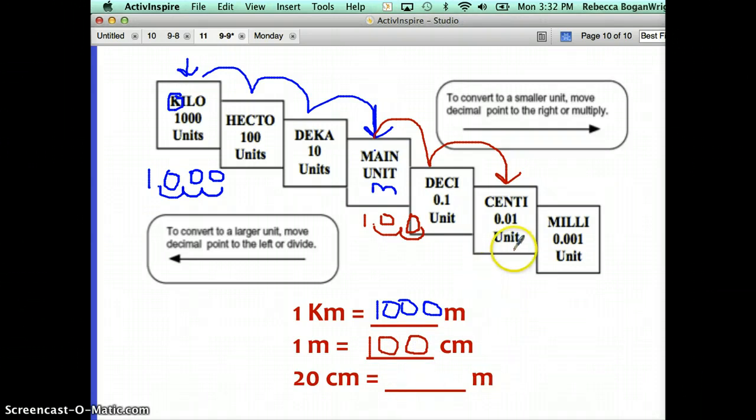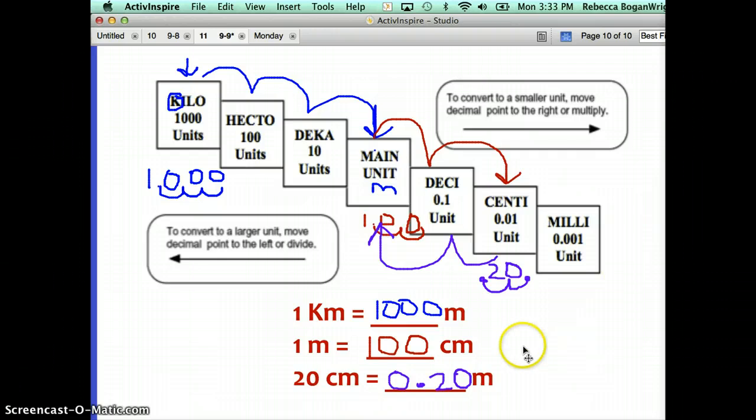What if you were going from centimeter back up to meter? Now in this case we're going the opposite direction. Starting from centimeters, in order to get to the main unit of meter, we have to move to the left two places or up the staircase. In that case, we need to move the decimal point to the left two times. So the decimal point on twenty is at the right side of the zero, and we would move that two places to the left. We would end up with .20. What we've done is we have divided by a hundred. Moving the decimal point to the left is the same as dividing.